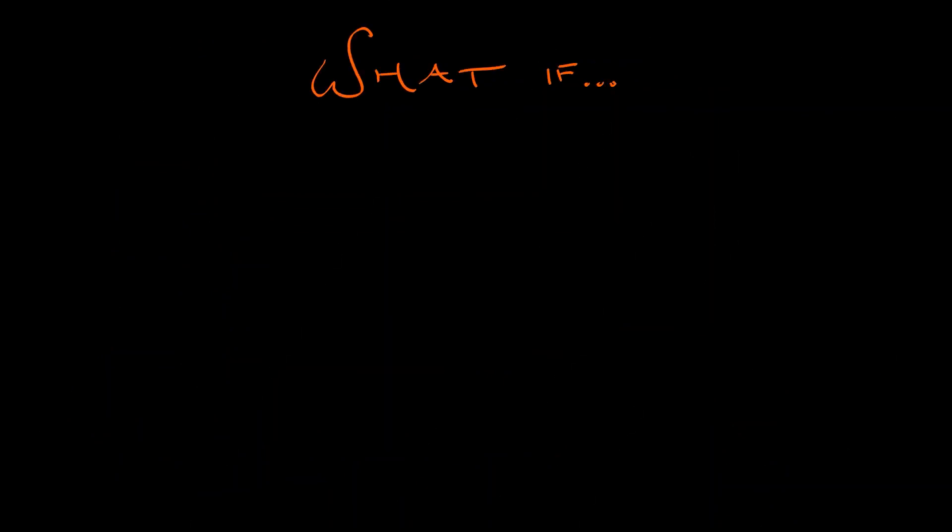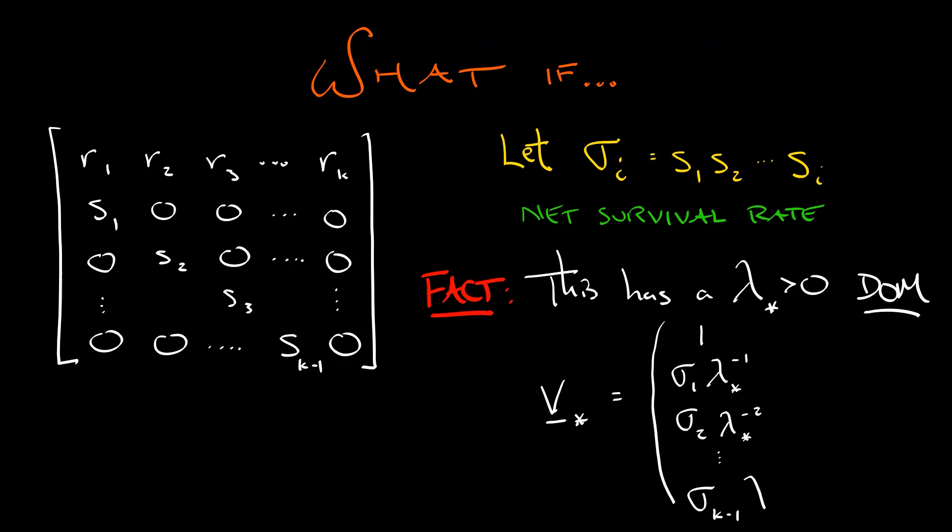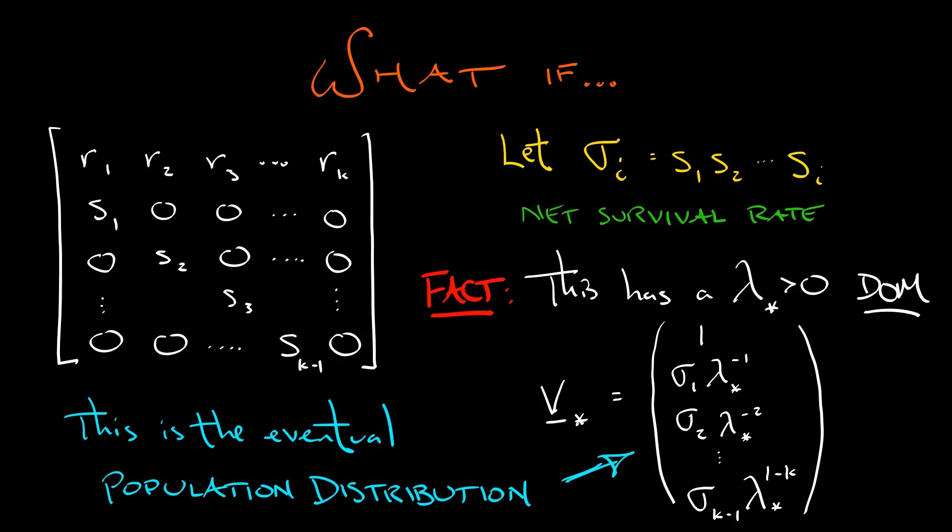Now, this is all cool. But what if we go back to the original model with survival rates? Well, if we denote by sigma i the product of the first i survival rates, that net survival rate, then this system also has a dominant eigenvalue lambda star with a dominant eigenvector with all terms positive. We're just rescaling each term by these net survival rates, sigma i. And this is going to be the eventual population distribution in this full Leslie model. That's a very nice, albeit somewhat complicated analysis. And what we see is that even linear dynamics hold some really interesting properties.